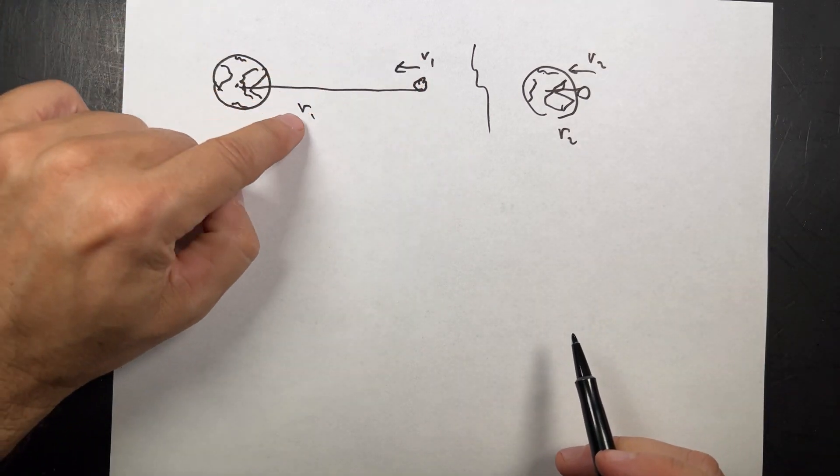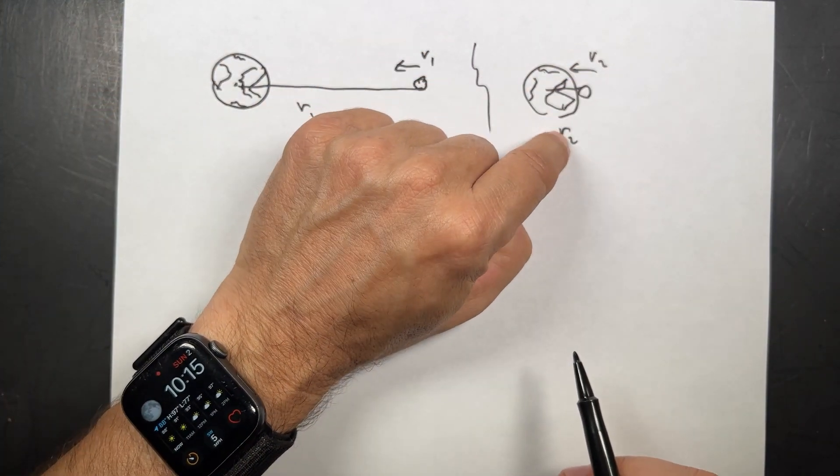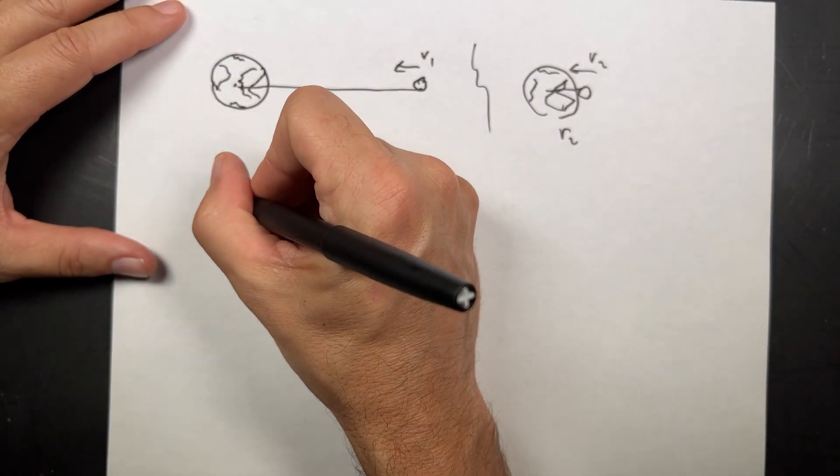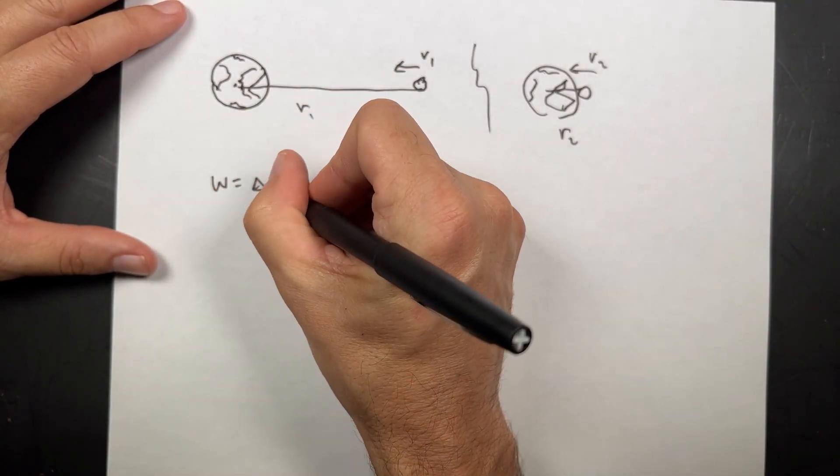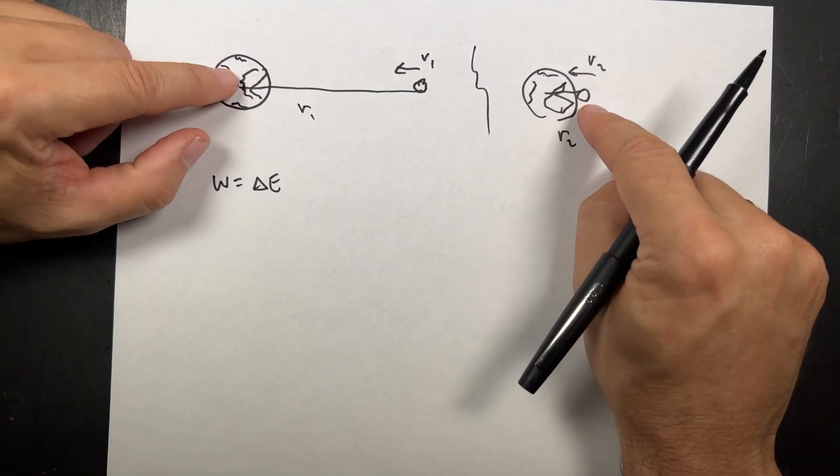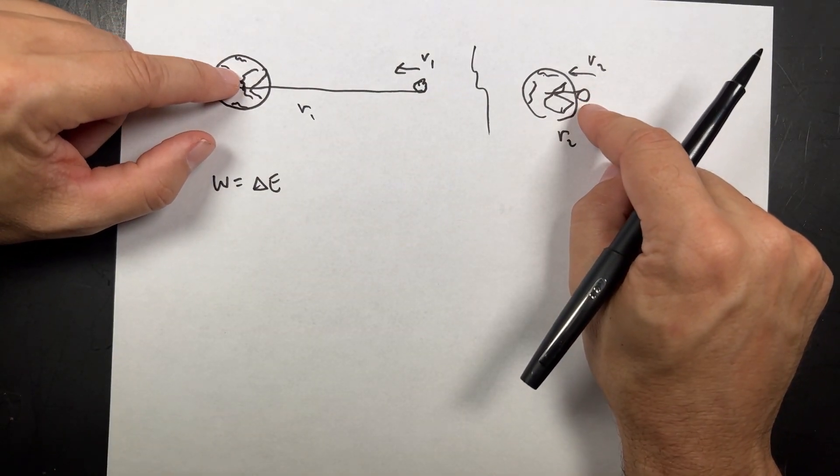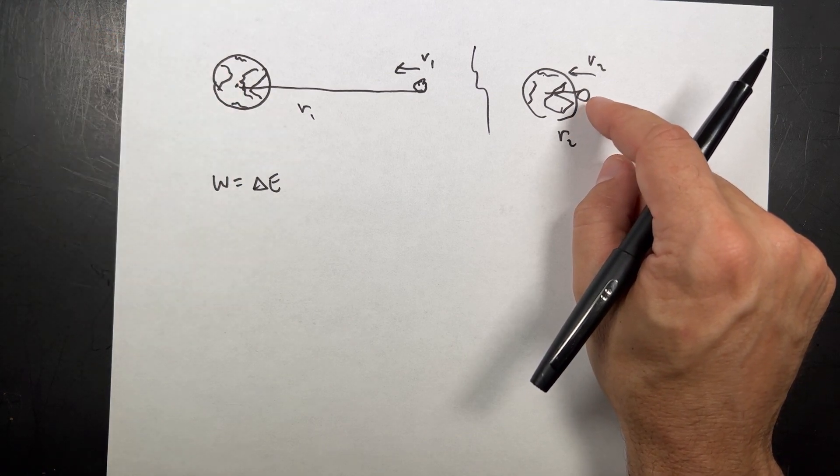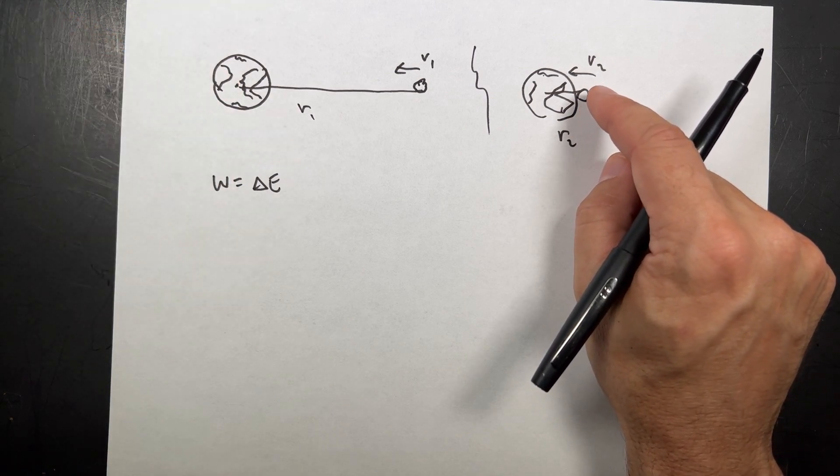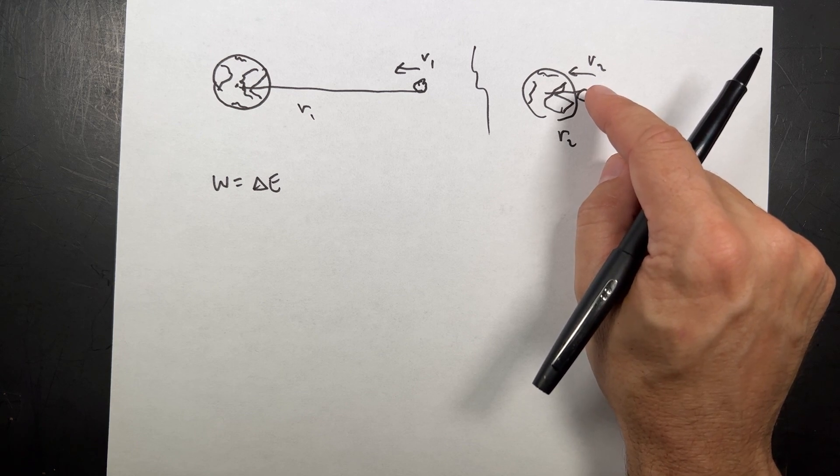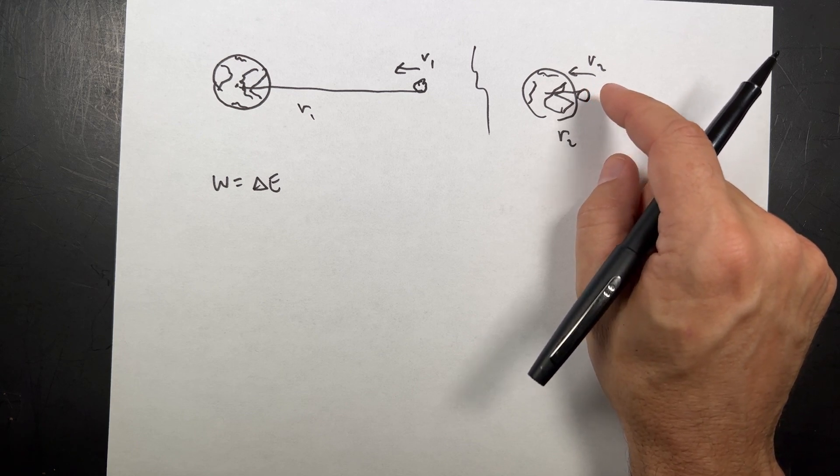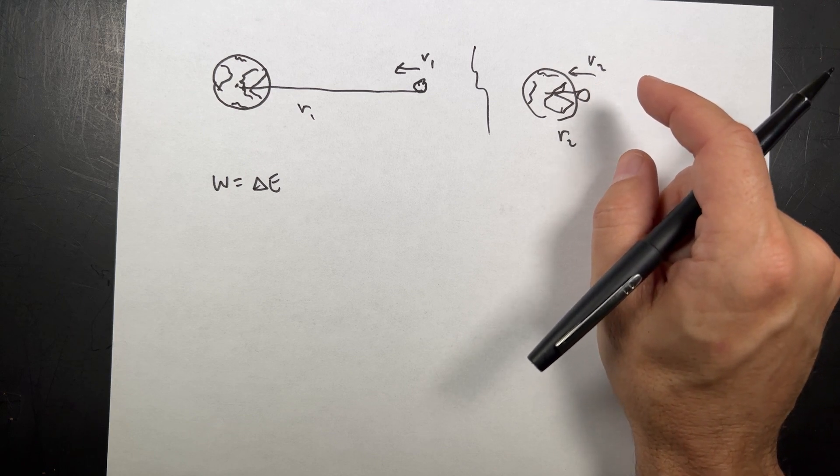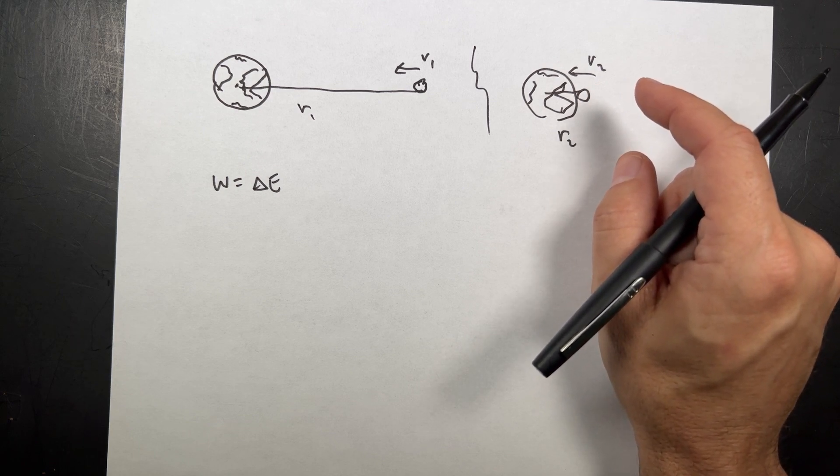So I know v1, I know r1, I know r2, I want to find v2. So it should be obvious that we should use the work energy principle. Because we don't care about how long it's moving. And if we did say, how fast is it going after 24 seconds or 38 hours or whatever, the problem is that the gravitational force is not constant. So it's not easy to calculate that change in velocity with a non-constant force.